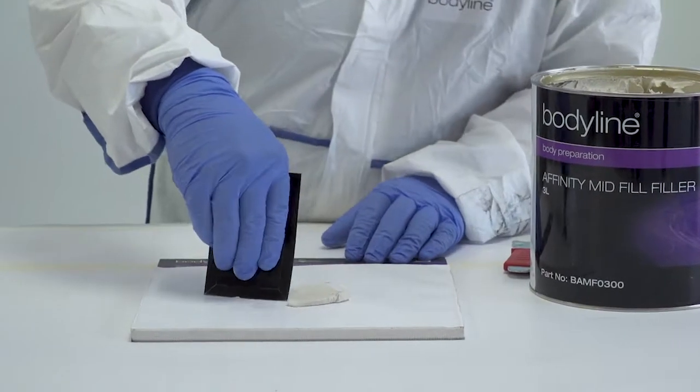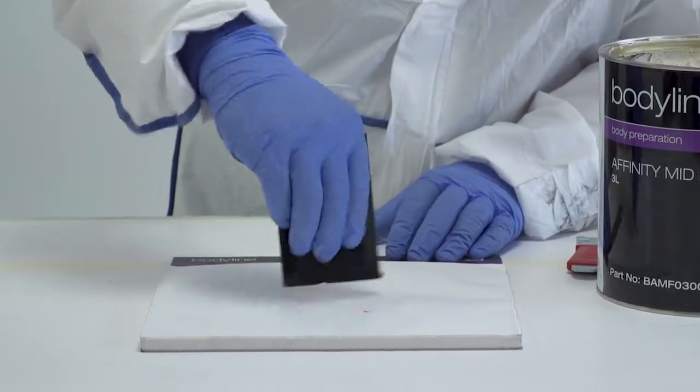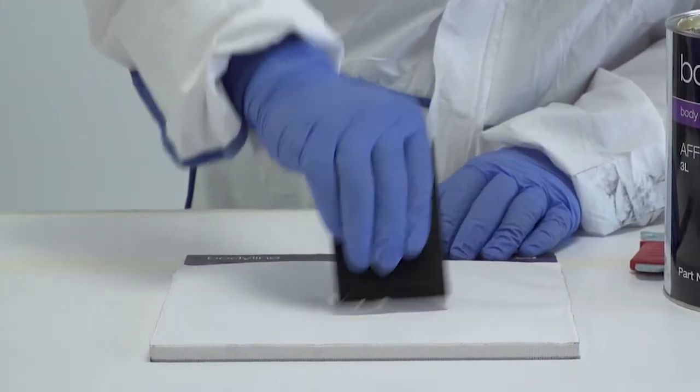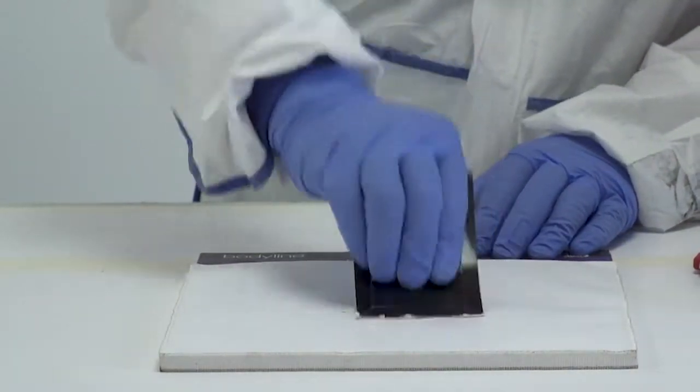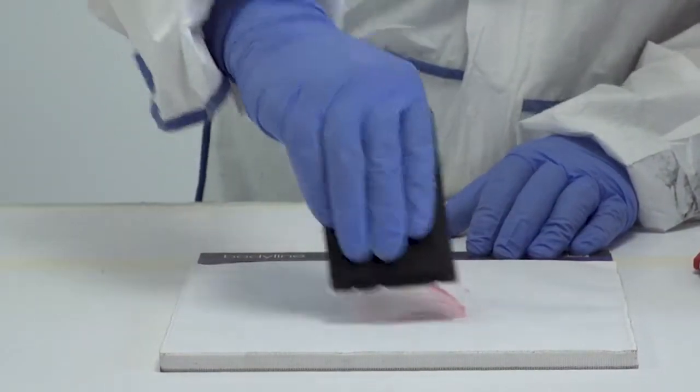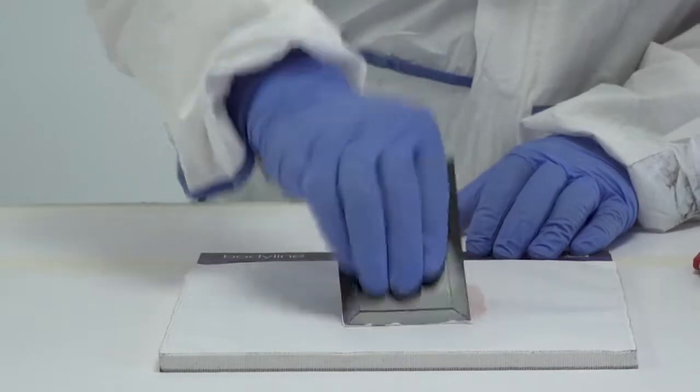For a temperature of 10 degrees, use 3% and for a temperature of 30 degrees, use 1% hardener. Never place the hardener directly onto the filler because as soon as this happens, the working time begins.